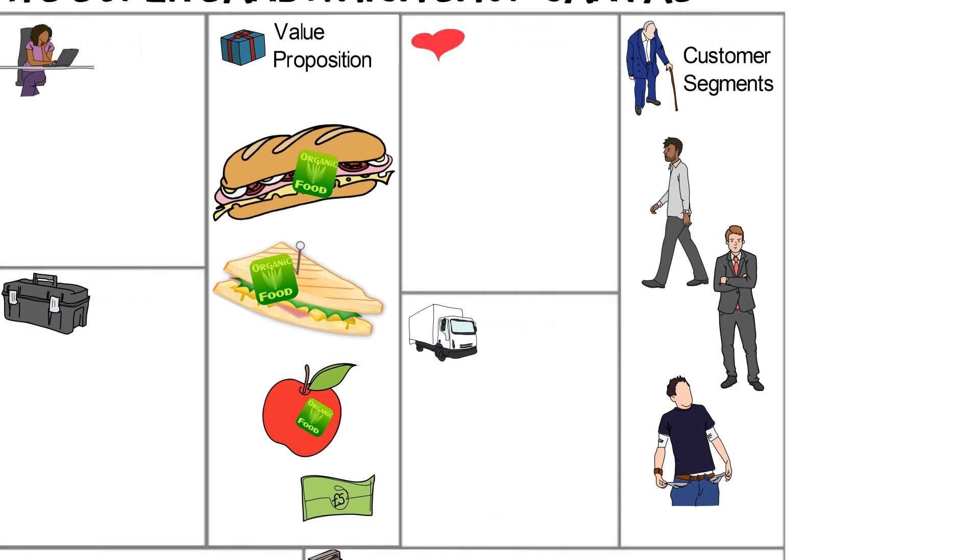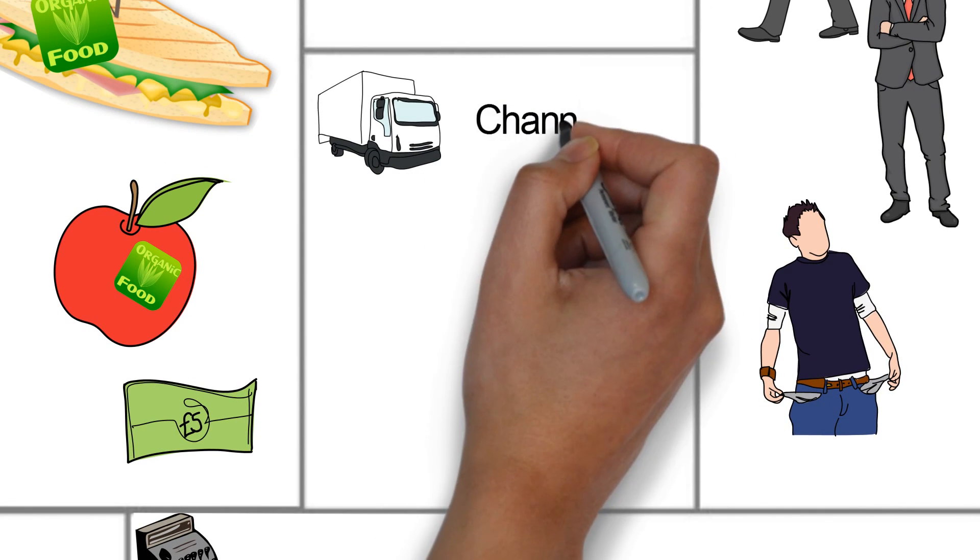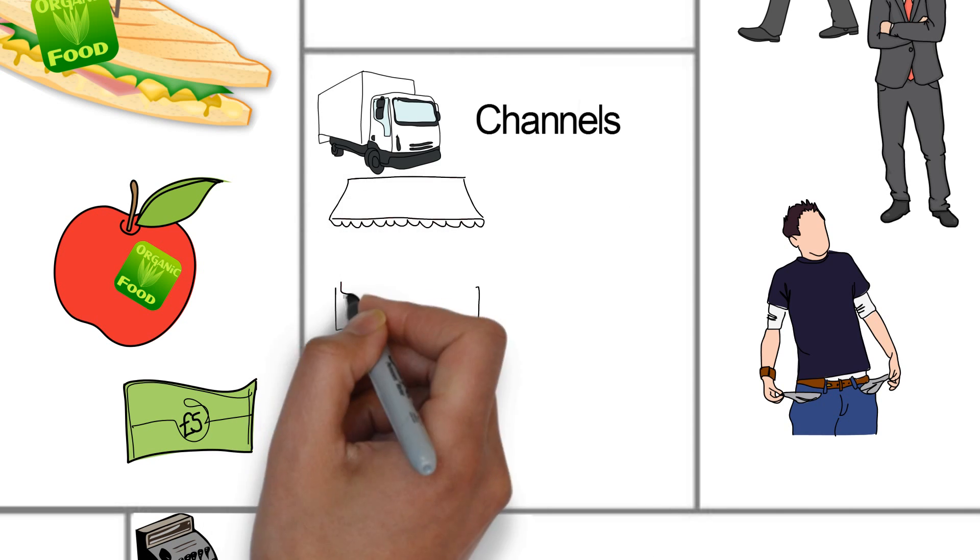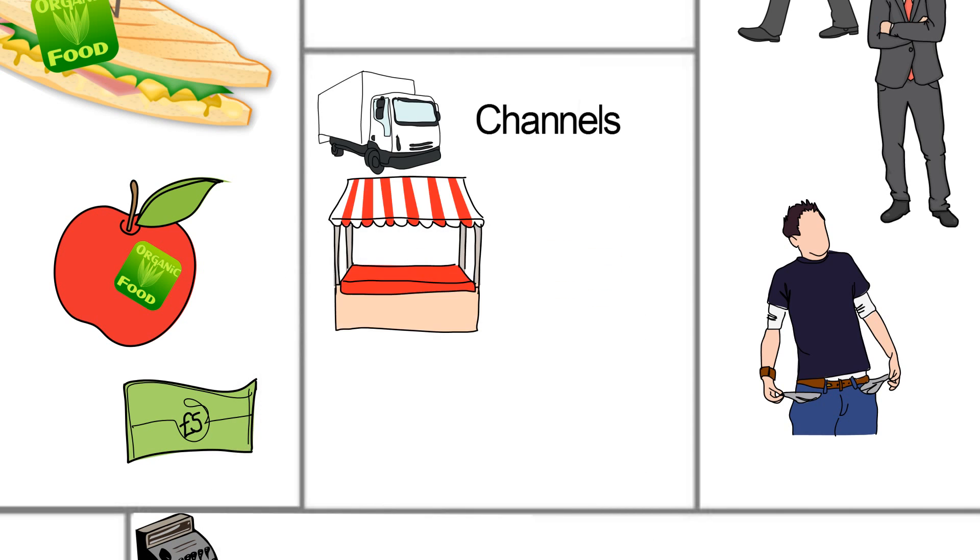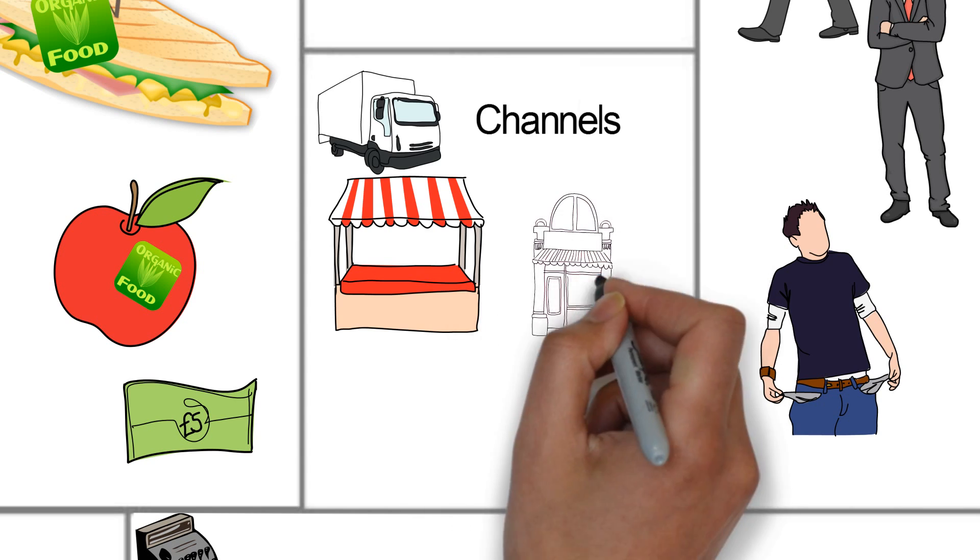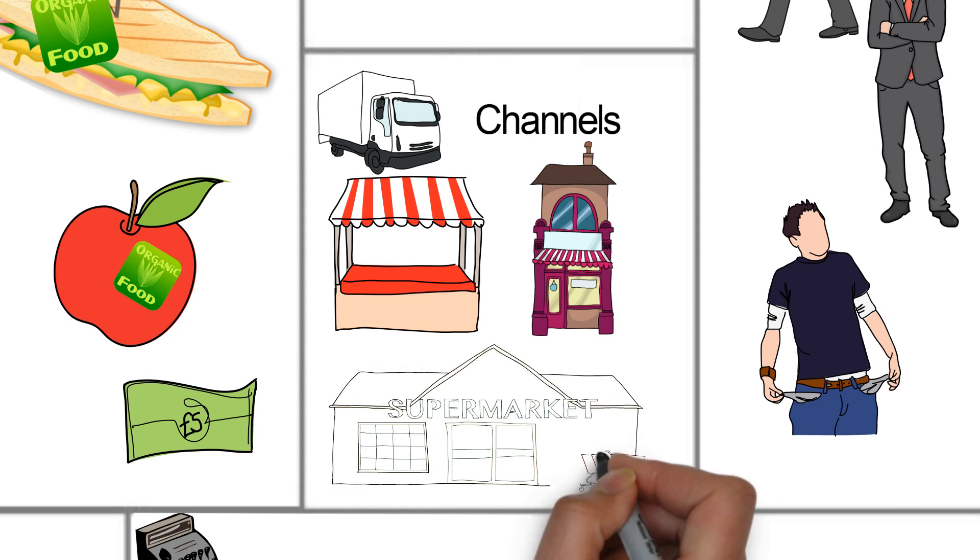In order for Sammy to deliver the value of his super sandwiches, Sammy must decide how and where Sammy's customers will be able to buy his food. In this process, Sammy has to make sure that he is using the proper channels to reach all the customers that he wants to deliver value to. So Sammy may decide to use kiosks to reach everyday people, his own specialty catered shops where he sells his sandwiches for successful entrepreneurs, and maybe he uses supermarkets to deliver pre-made sandwiches to the struggling entrepreneurs.